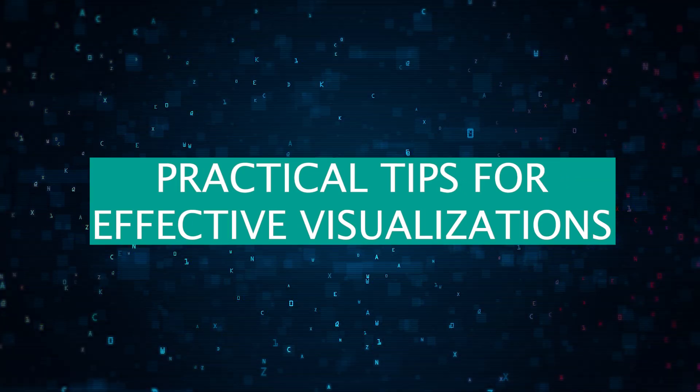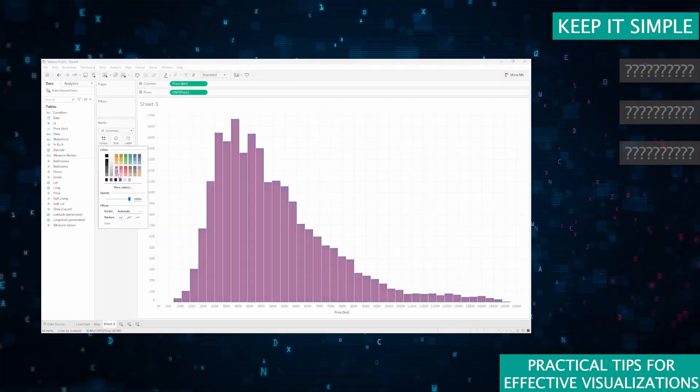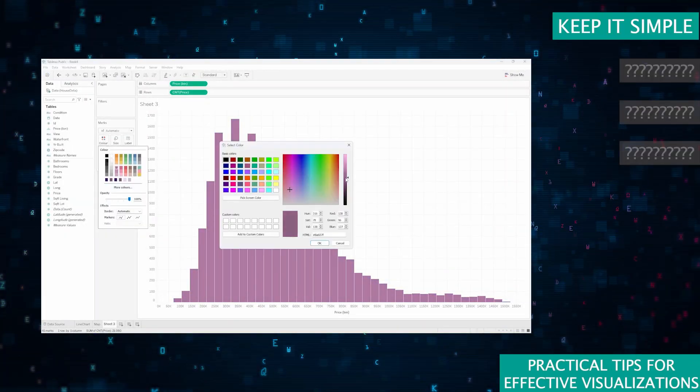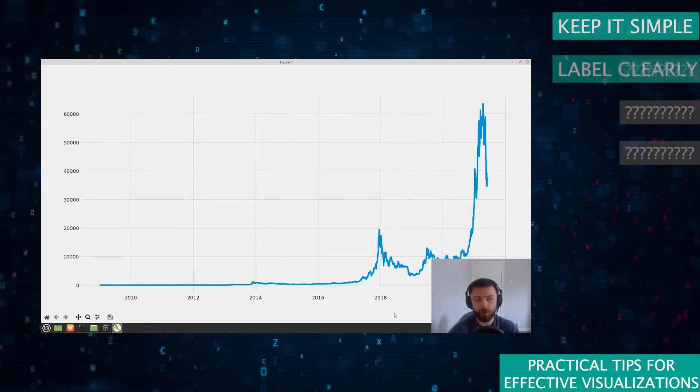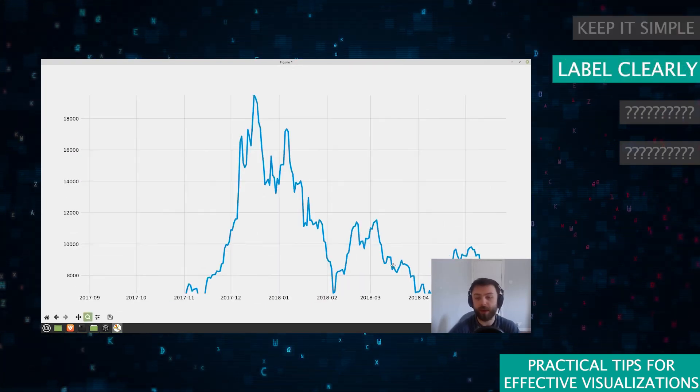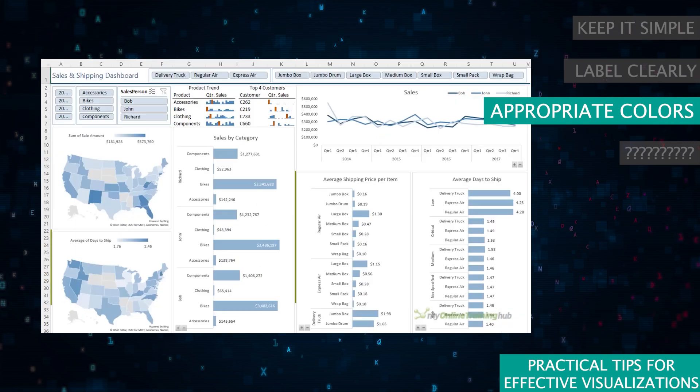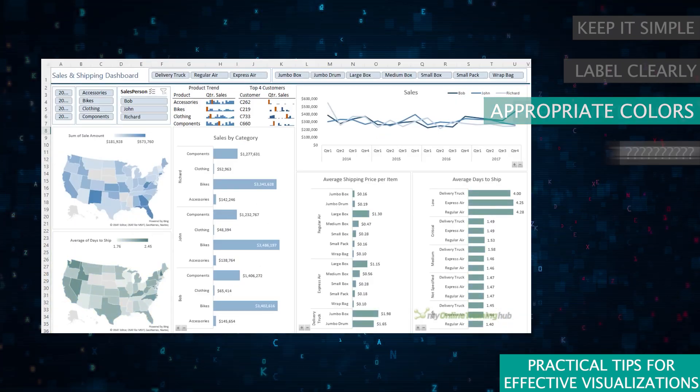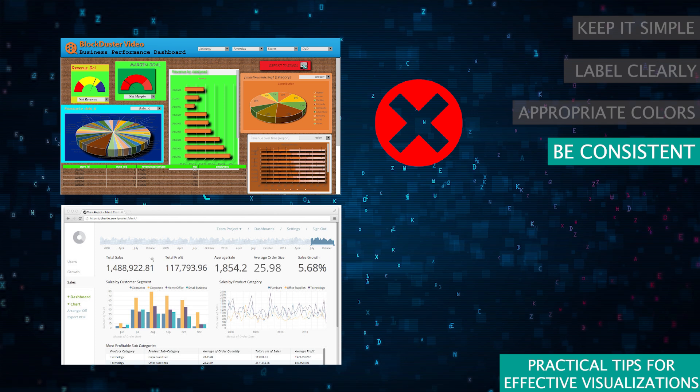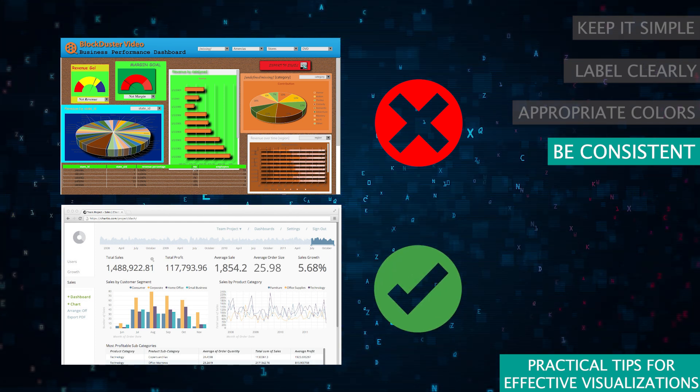Here are some practical tips to make your visualizations more effective. One, keep it simple. Avoid clutter. The cleaner your plot, the easier it is to understand. Two, label clearly. Ensure your axis titles and legends are clearly labeled. Three, use appropriate colors. Colors should enhance, not distract. Use a color palette that makes sense for your data. Four, be consistent. Use the same style and color scheme across your visuals to maintain a professional look.